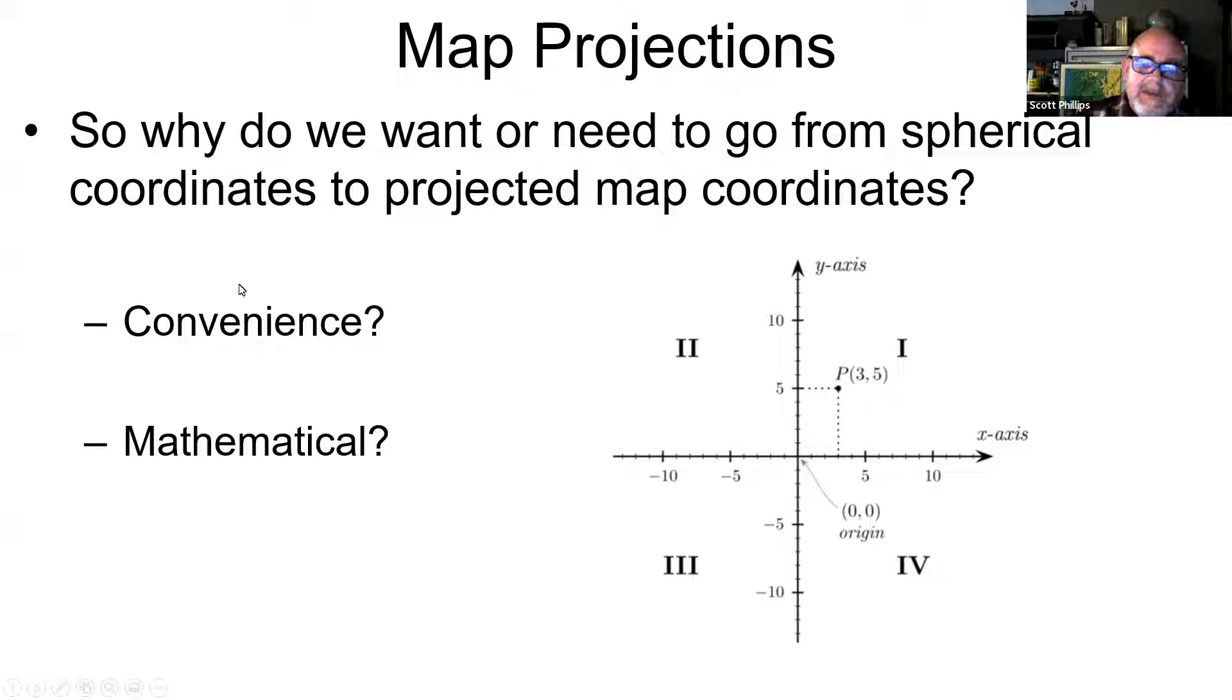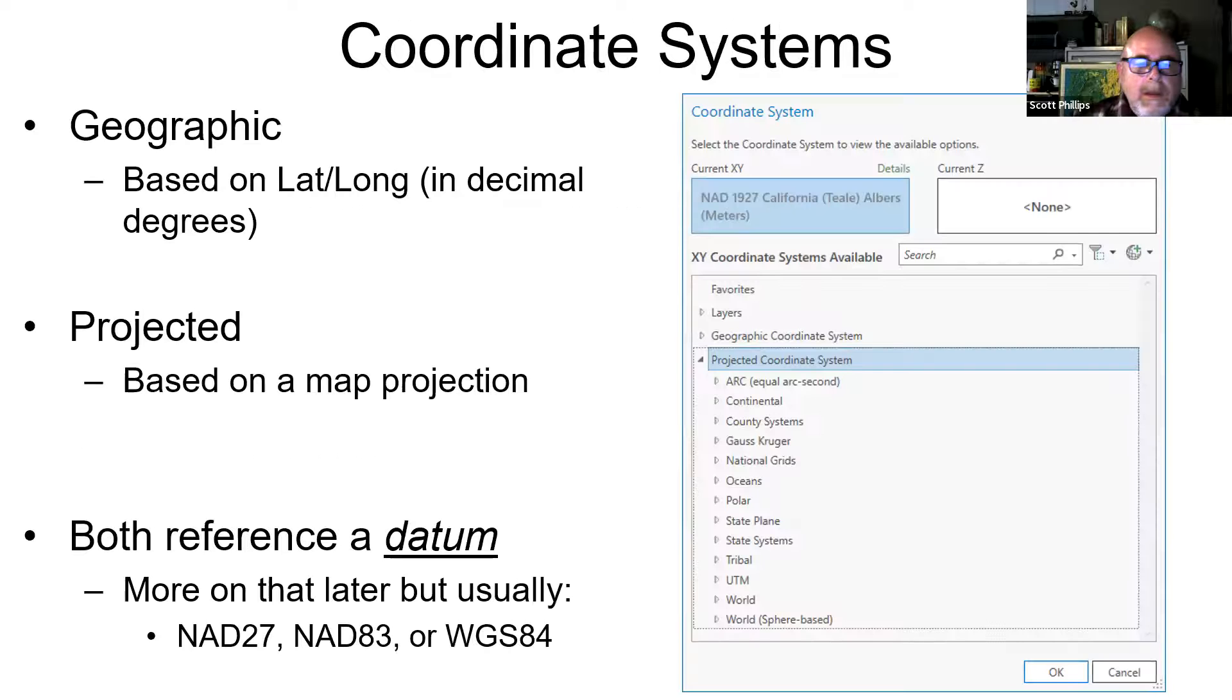So why do we want to do this? For convenience of having, rather than displaying a globe, we can display a flat map, but also for mathematical purposes. We can use a fake coordinate system by using latitude and longitude and decimal degrees that we discussed in the last clip. But that has some limitations. There are some limitations on that. It is a way to display it, but it's a bit distorted because latitude and longitude is not a true x and y coordinate system, but it is one option.